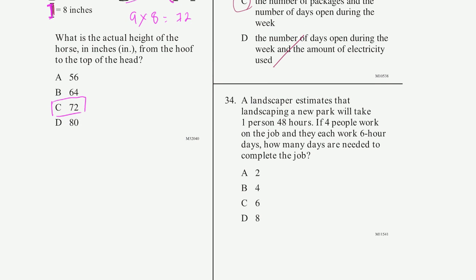Problem 34. A landscaper estimates that landscaping a new park will take one person 48 hours. If four people work on the job, and they each work 6 hour days, how many days are needed to complete the job? So if one person takes 48 hours,